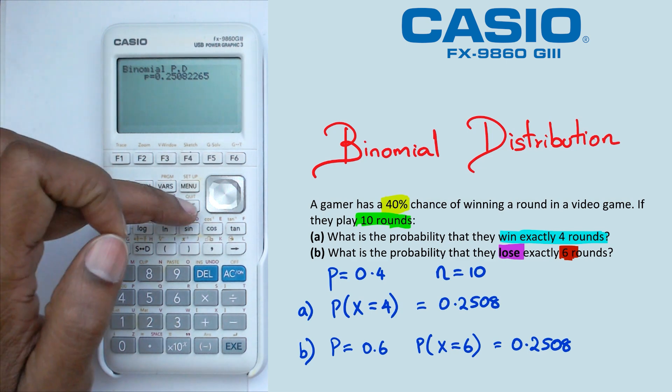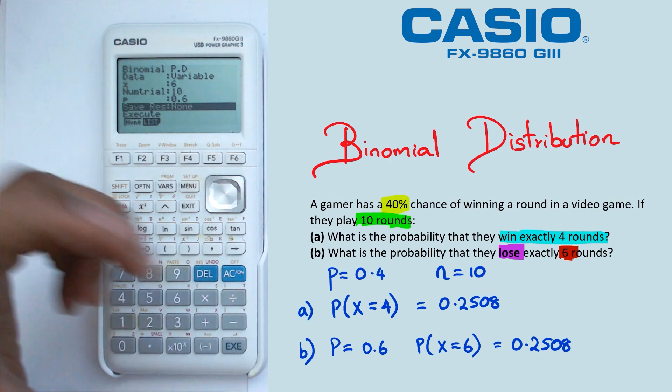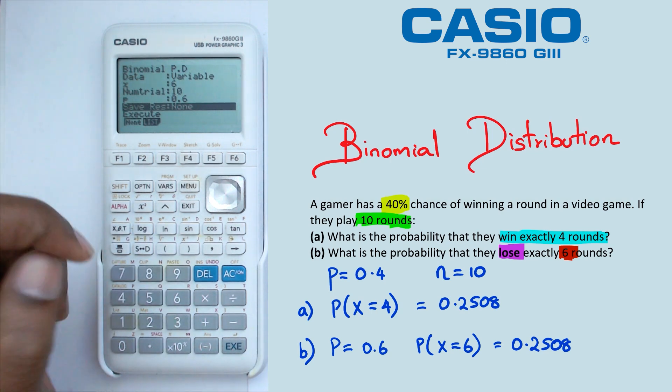And folks, I just wanted to show you that with binomial distribution, you could actually look at both success or failure. And that's what these two questions actually do. They show you both the probability of success and failure.